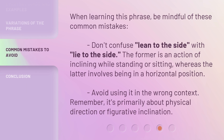When learning this phrase, be mindful of these common mistakes. Don't confuse 'lean to the side' with 'lie to the side.' The former is an action of inclining while standing or sitting, whereas the latter involves being in a horizontal position. Avoid using it in the wrong context. Remember, it's primarily about physical direction or figurative inclination.